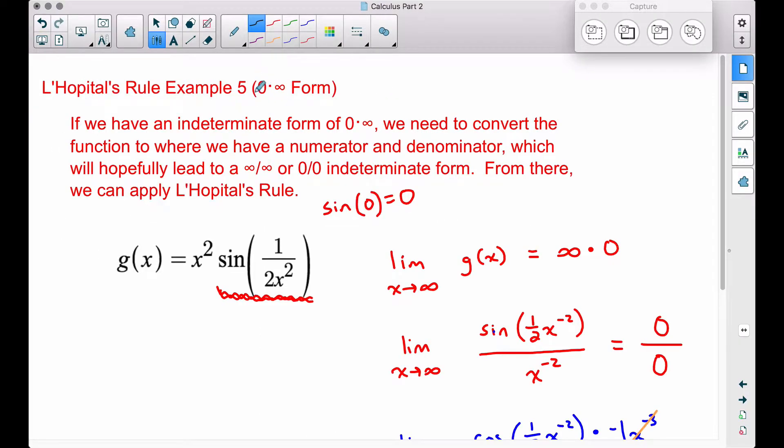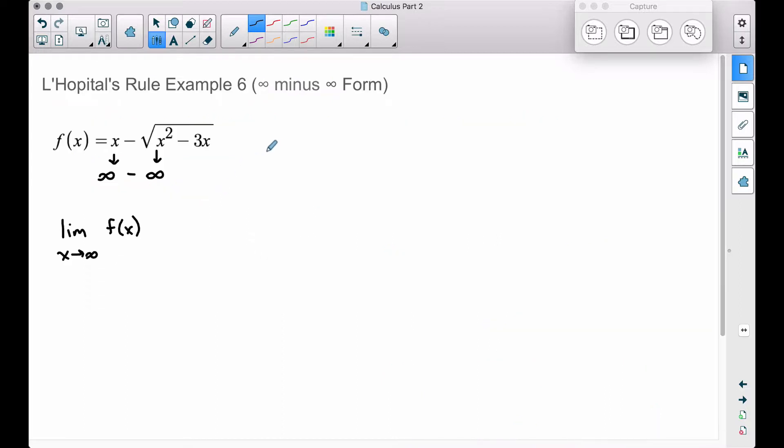So here's the trick. Like in example 5, I did explain where we wanted to try to get it in a fraction form where we have infinity over infinity or 0 over 0, and then we can apply L'Hopital's rule. I'm going to rewrite f(x) as the following. I'm going to leave that first term alone, and inside of here, I'm going to factor out an x squared.